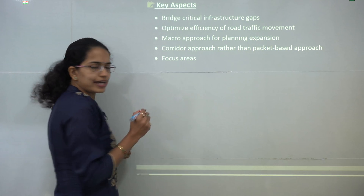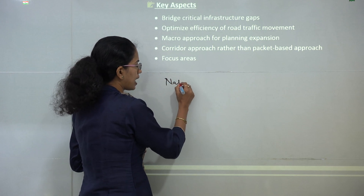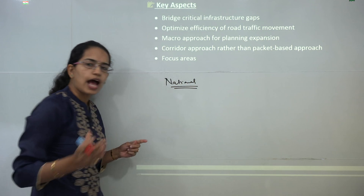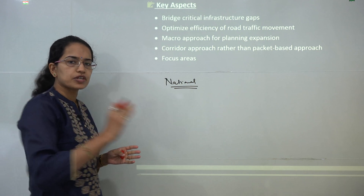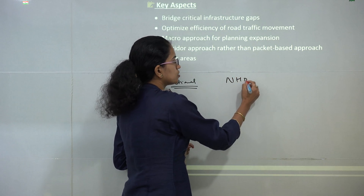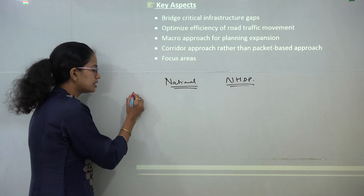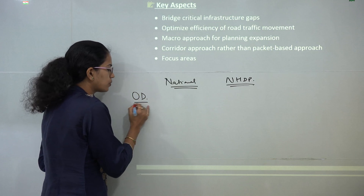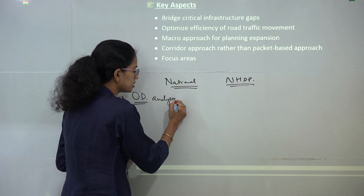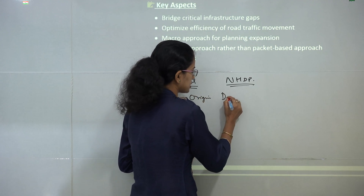Now under Bharatmala Pariyojna, the idea is development of national highways and national corridors — but how it has been different from the previous scheme, NHDP. The key difference here is that this study is based on OD analysis, where we talk about the origin and the destination.